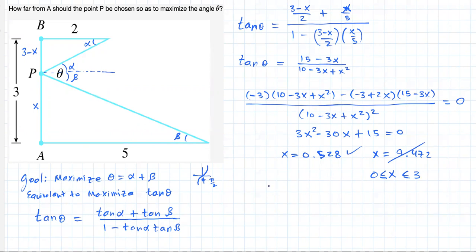But now, just to make sure that x is going to maximize our theta, let's do some evaluations. Let's evaluate at 0, at 3, and in between our strong candidate 0.528. Let's see what we get for tangent of theta.